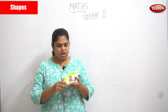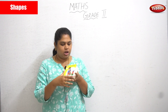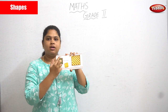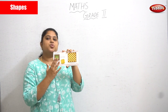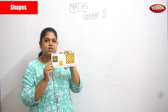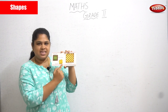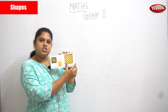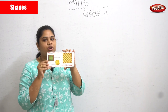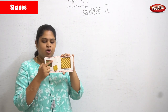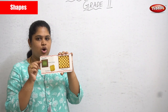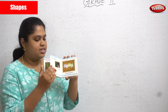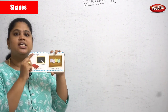This is a shapes book. See here — this is a square. Examples of a square: a biscuit is in a square shape, and a chessboard is also in a square shape. All four sides are equal in size.